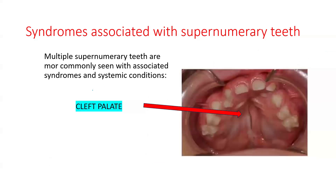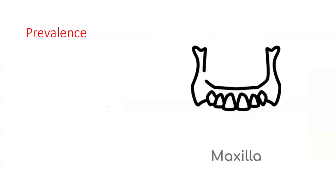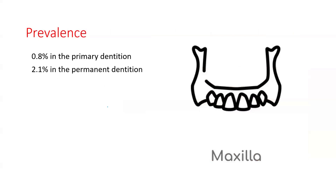The third associated condition is cleft palate. There is a presence of supernumerary teeth in up to 10–20% of people with cleft palate. Coming to prevalence, supernumerary teeth occur in 0.8% of the primary dentition and 2.1% of the permanent dentition. It is higher in males than females, as per Schaefer's.